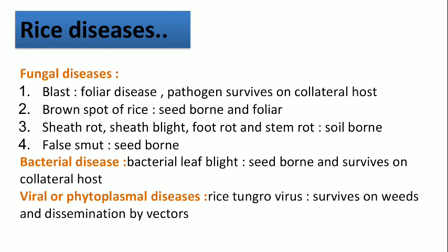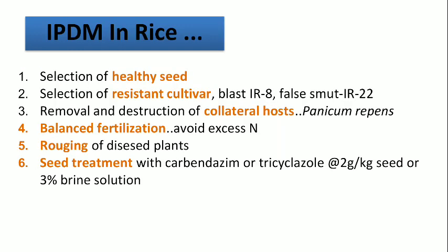The collateral host is of the same family. In viral or phytoplasmal diseases, rice tungro virus is a viral disease — the pathogen survives on weeds and dissemination occurs by vector insects, that is hoppers. Now let's look at different integrated disease management combination practices so that we can manage or prevent the diseases.